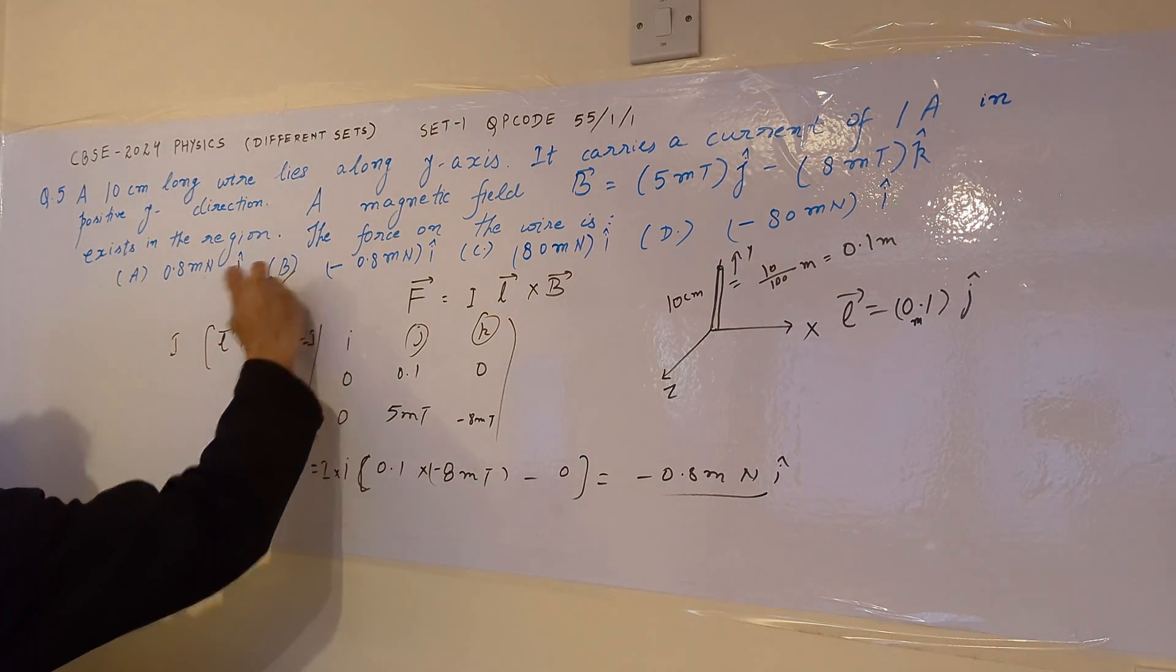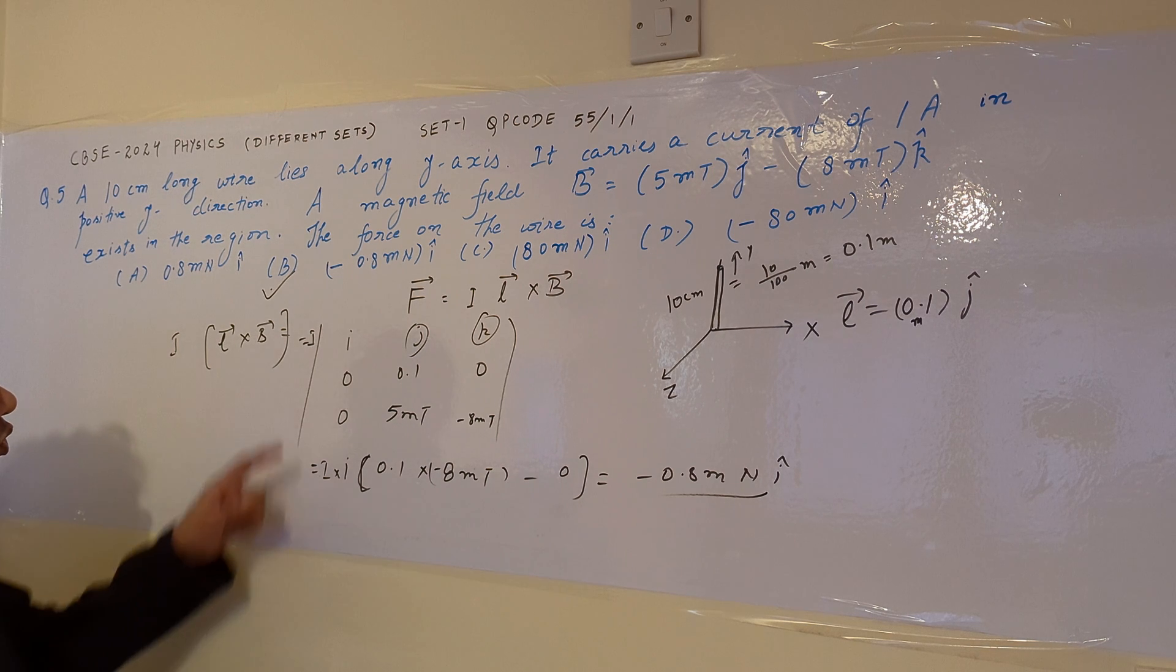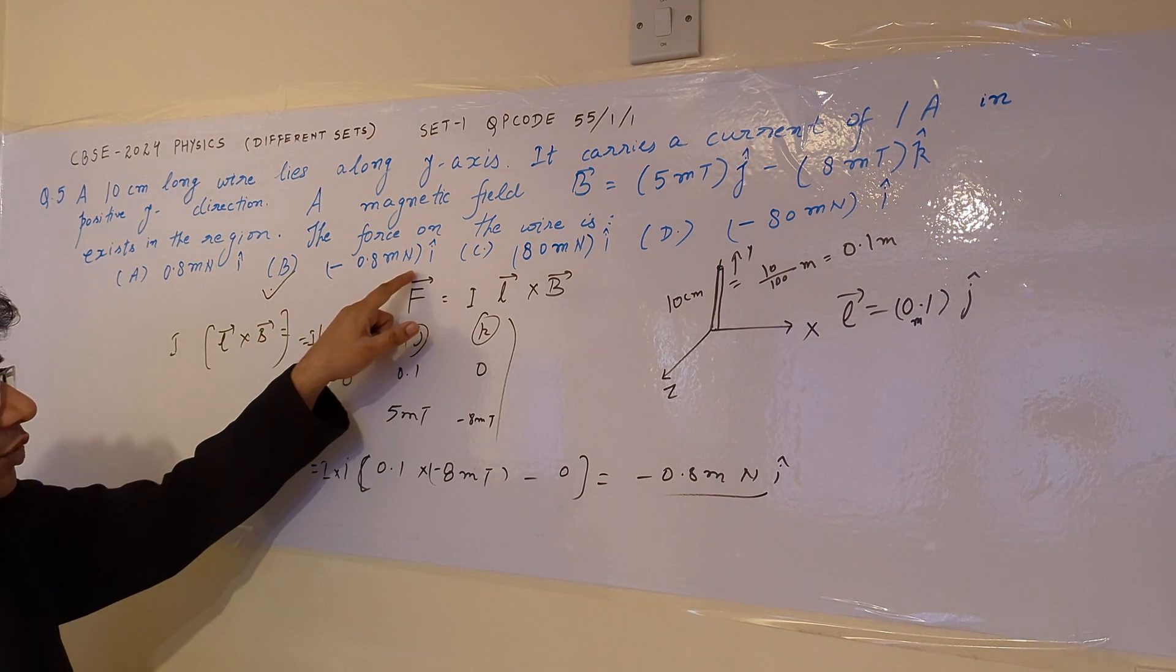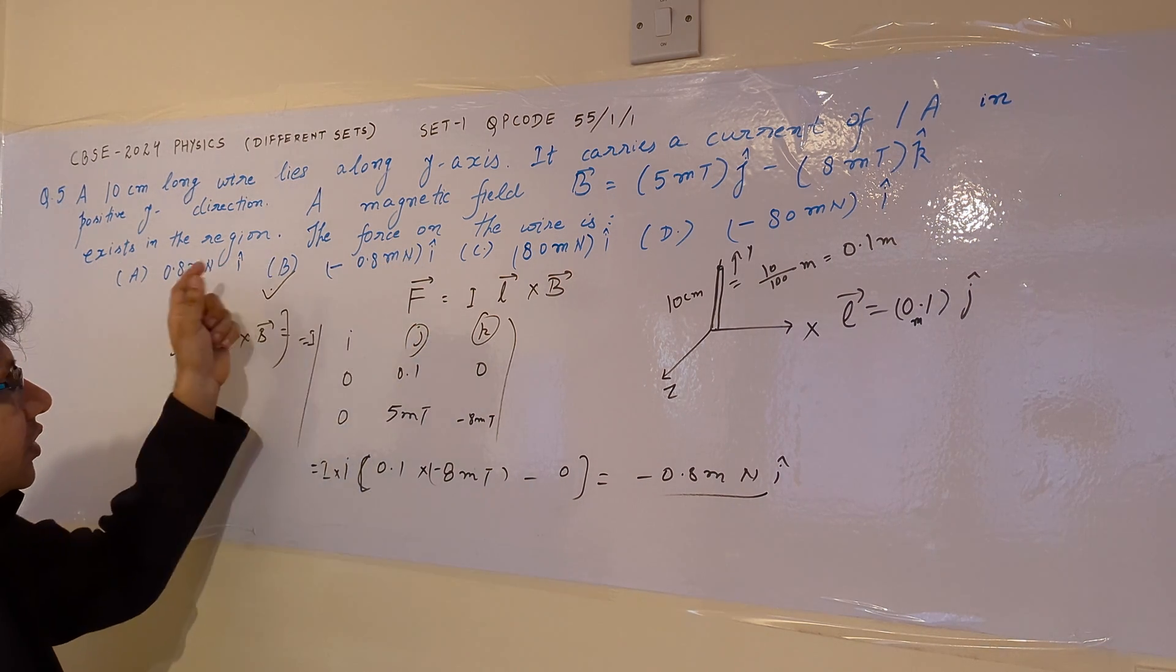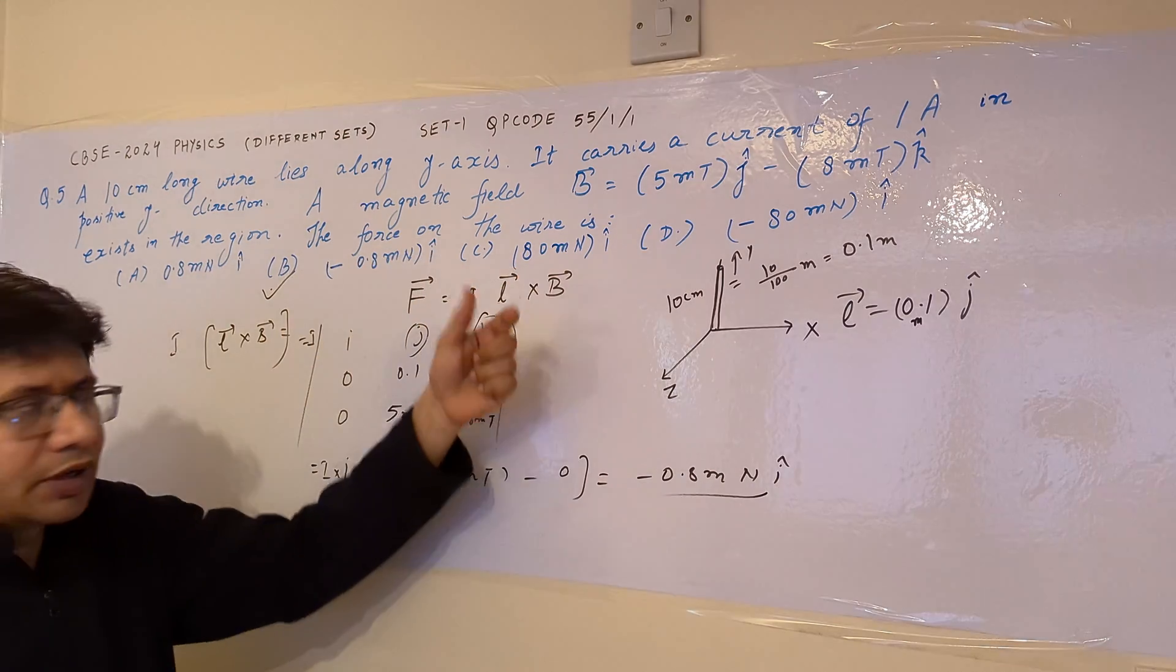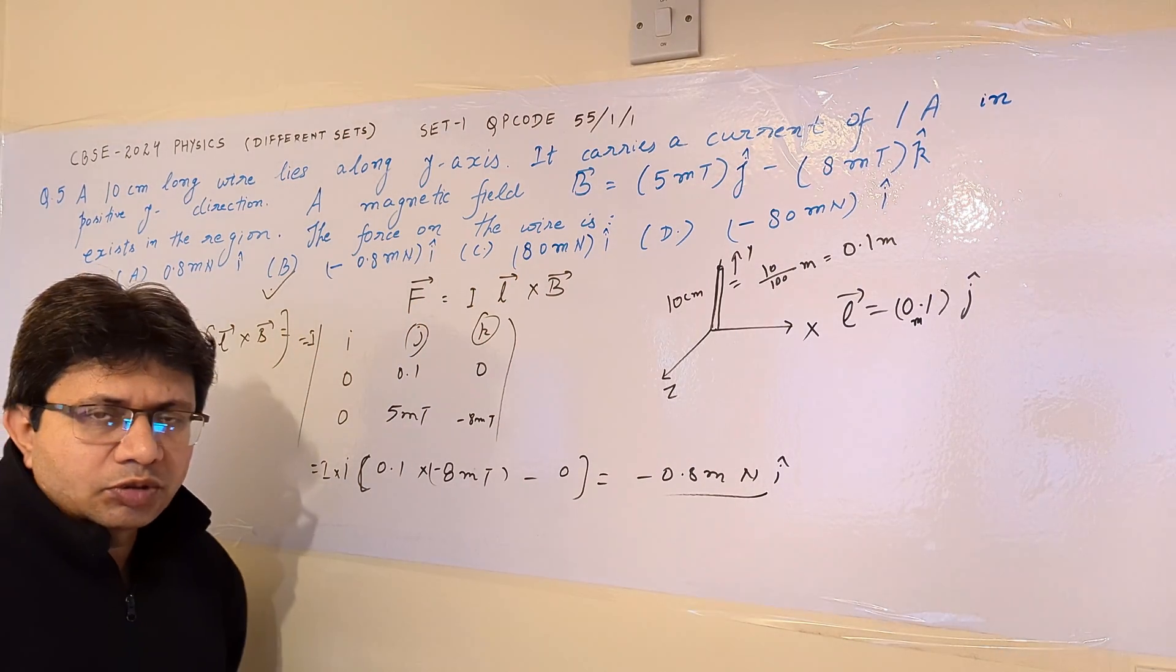So this is option B. Option B is correct here. Minus 0.8 millinewton I cap is the final force experienced by this particular wire. So hope you understand this problem. Thank you.